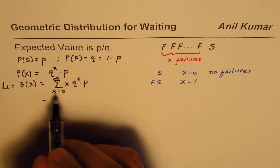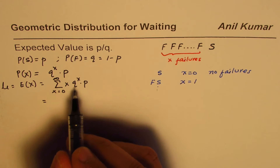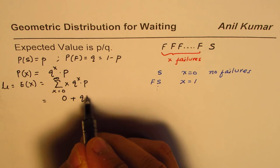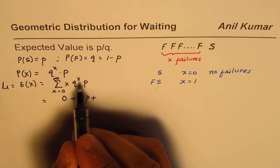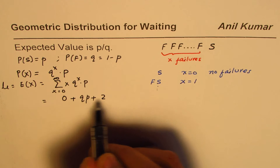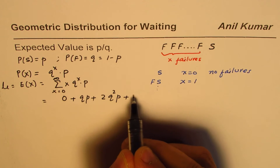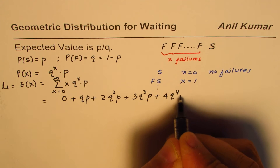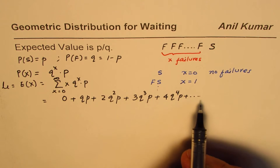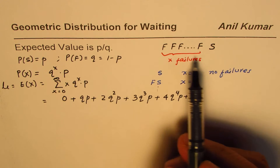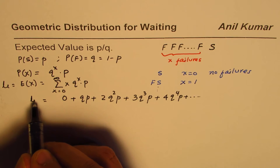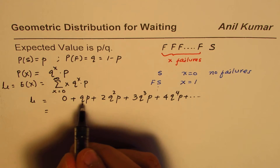Let's expand this. When X equals 0 the first term is 0. When X equals 1 we get 1 times QP. When X equals 2 it is 2Q squared P. When X equals 3 it is 3Q cubed P. When X equals 4 it is 4Q to the fourth P, and so on. This is an infinite series since we can have arbitrarily many failures. We can factor out QP to get mu equals QP times (1 plus 2Q plus 3Q squared plus 4Q cubed plus ...).